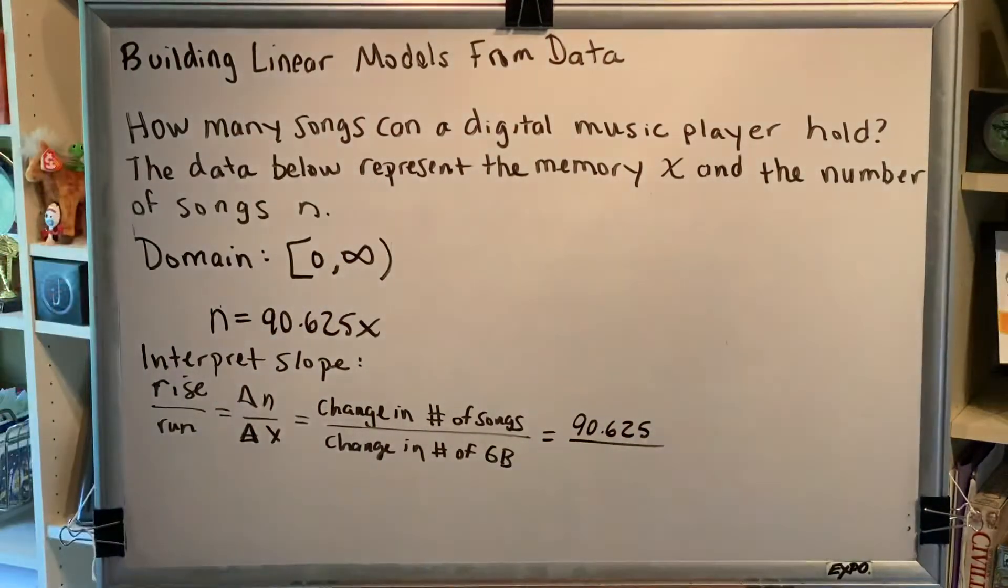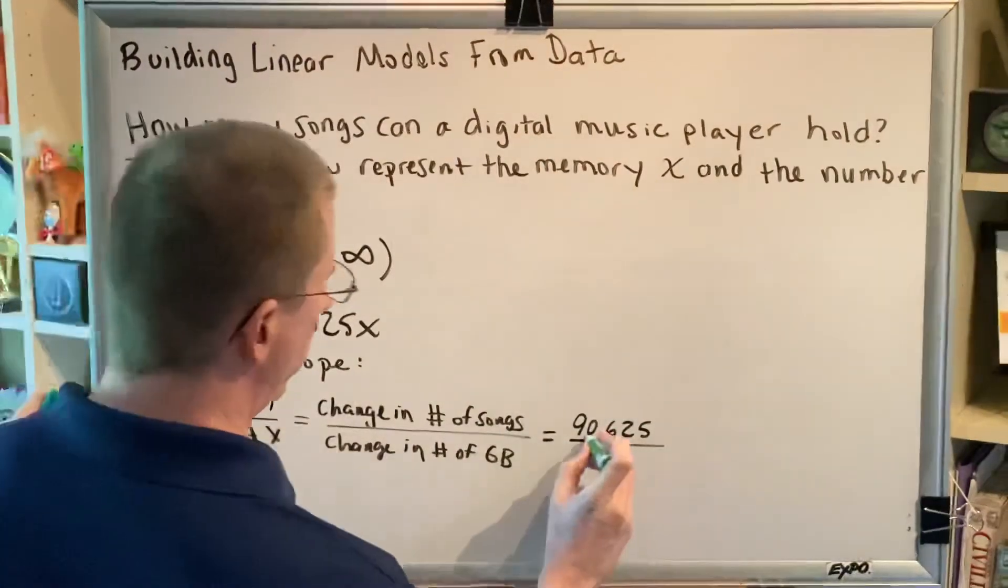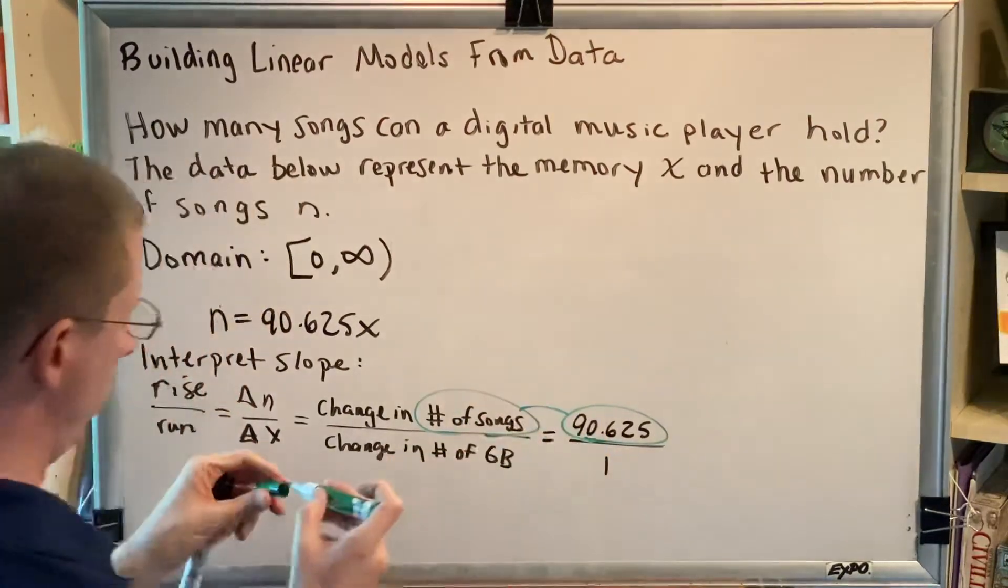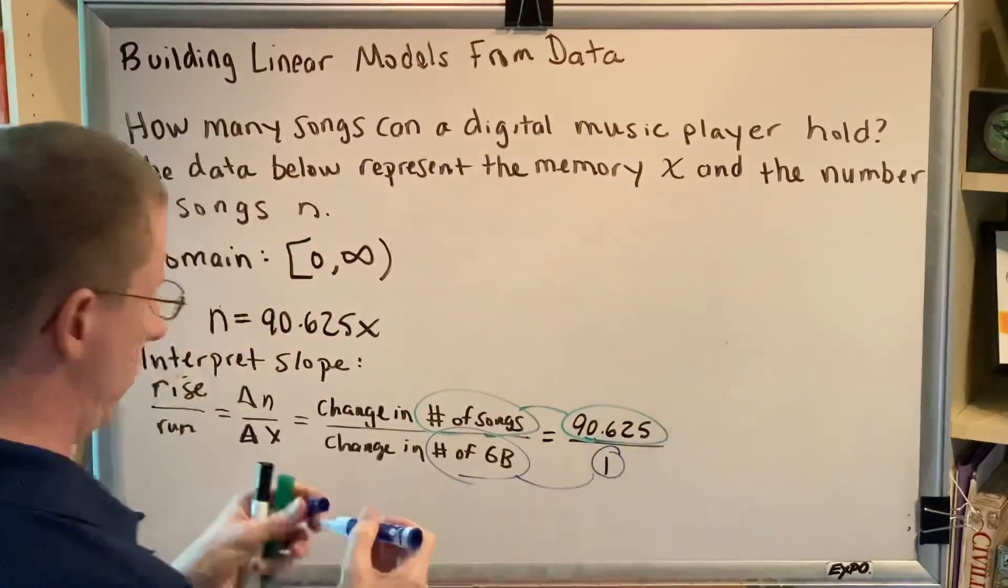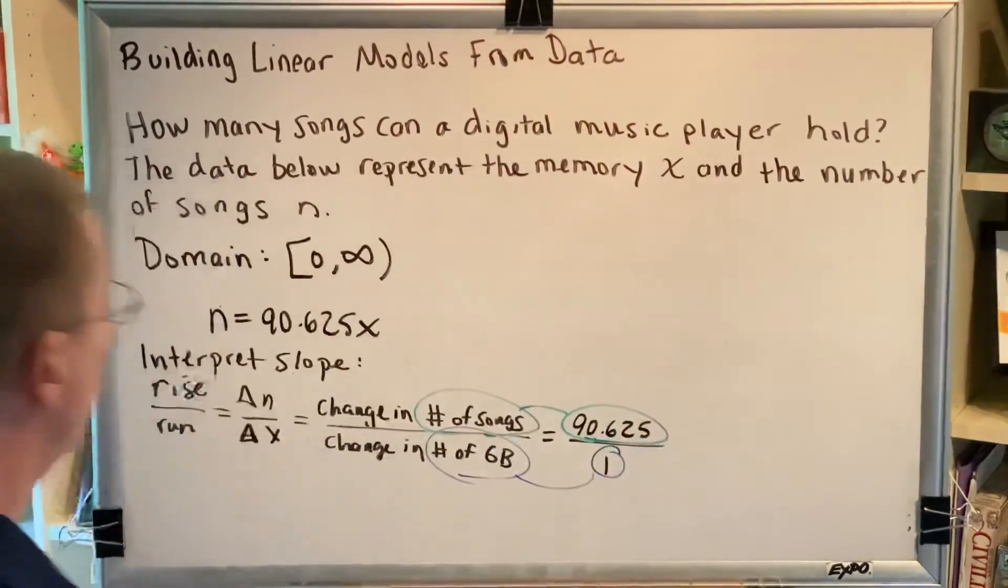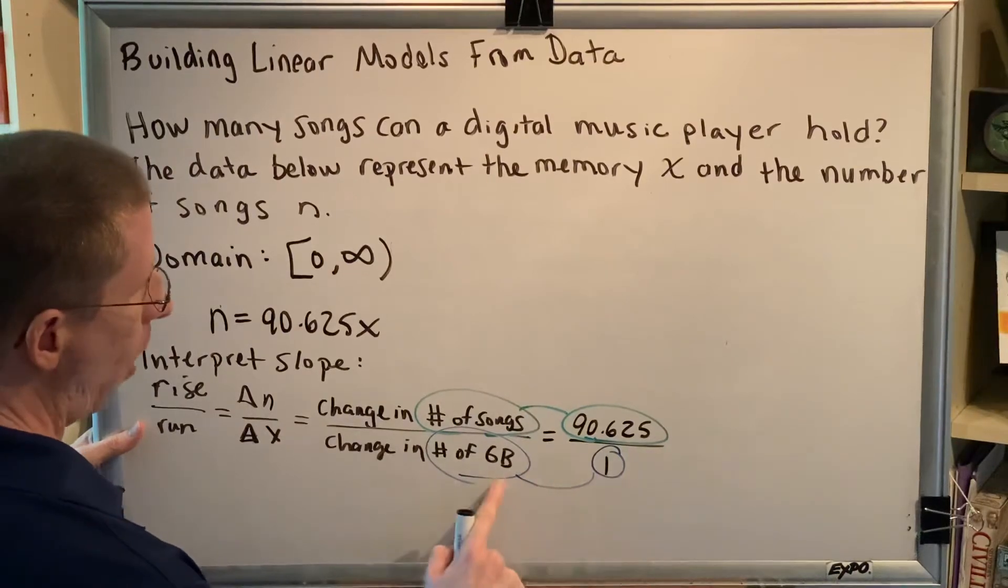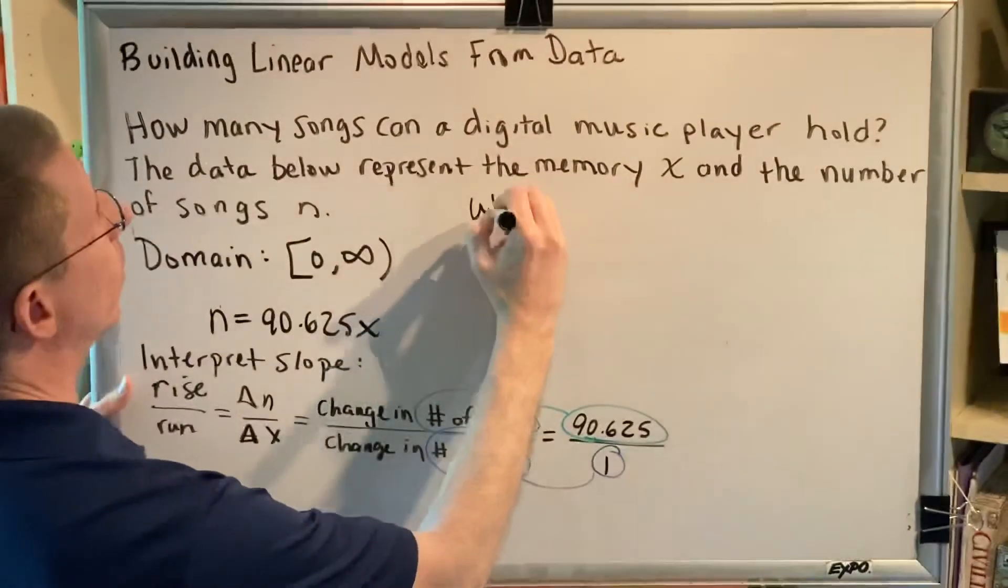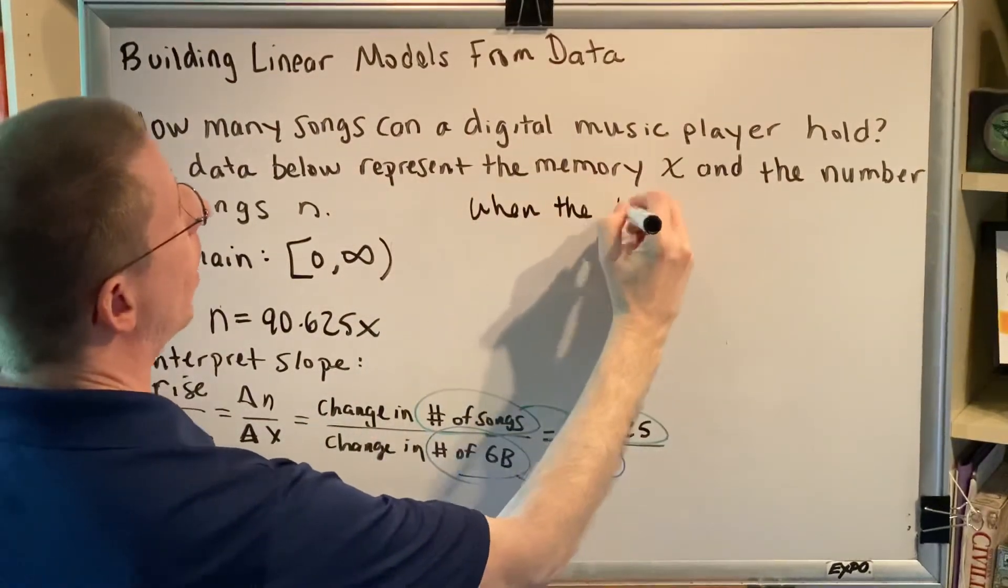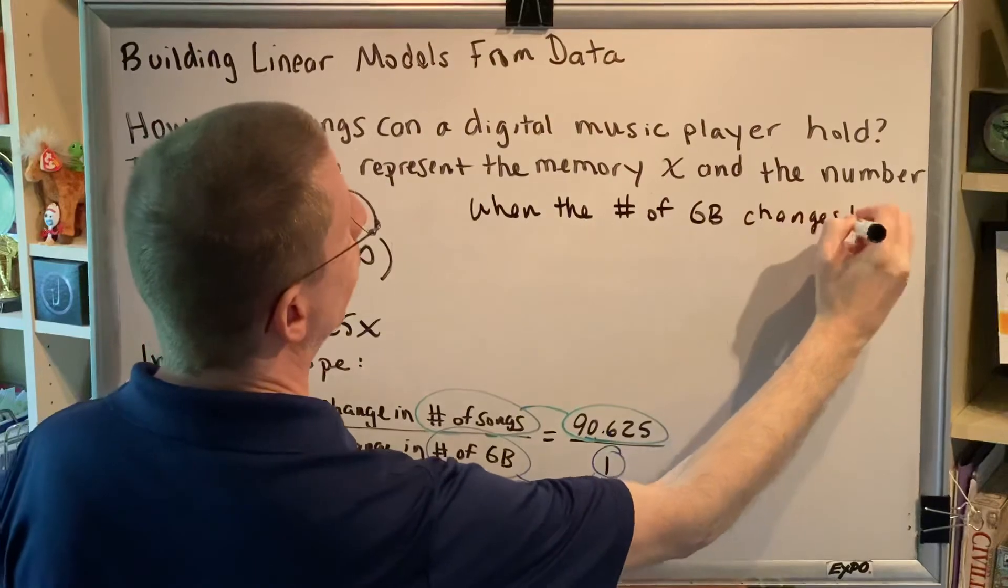I'm going to write that as a fraction. To turn something that is not a fraction into a fraction, you just put a 1 under it. And now we're going to do a very easy word comparison here. We're going to put this number and this number together. And we're going to put this number and this idea together. And then make a sentence. Remember, this is all about change. So when the number of gigabytes changes by 1, then the number of songs changes by 90.625. Let's write that. When the number of gigabytes changes by 1, the number of songs changes by 90.625.